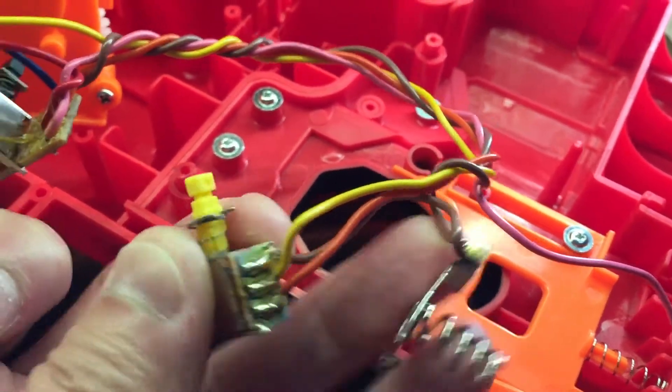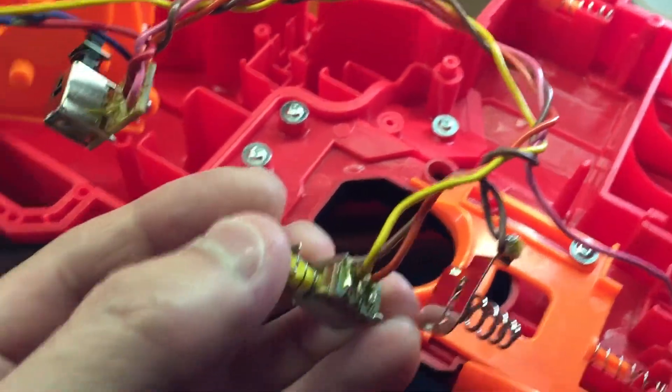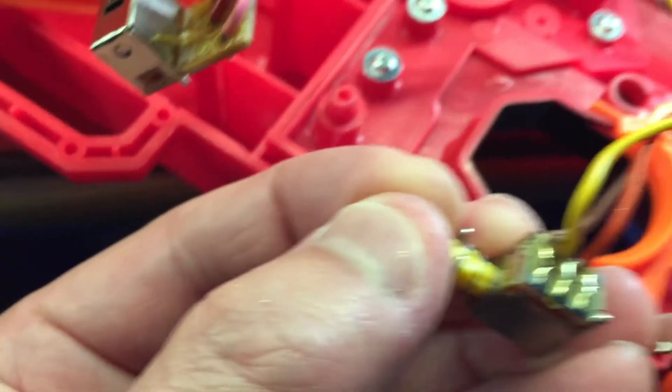We can trace the brown going to our battery end, our negative battery, and also to the normally closed on our trigger switch.